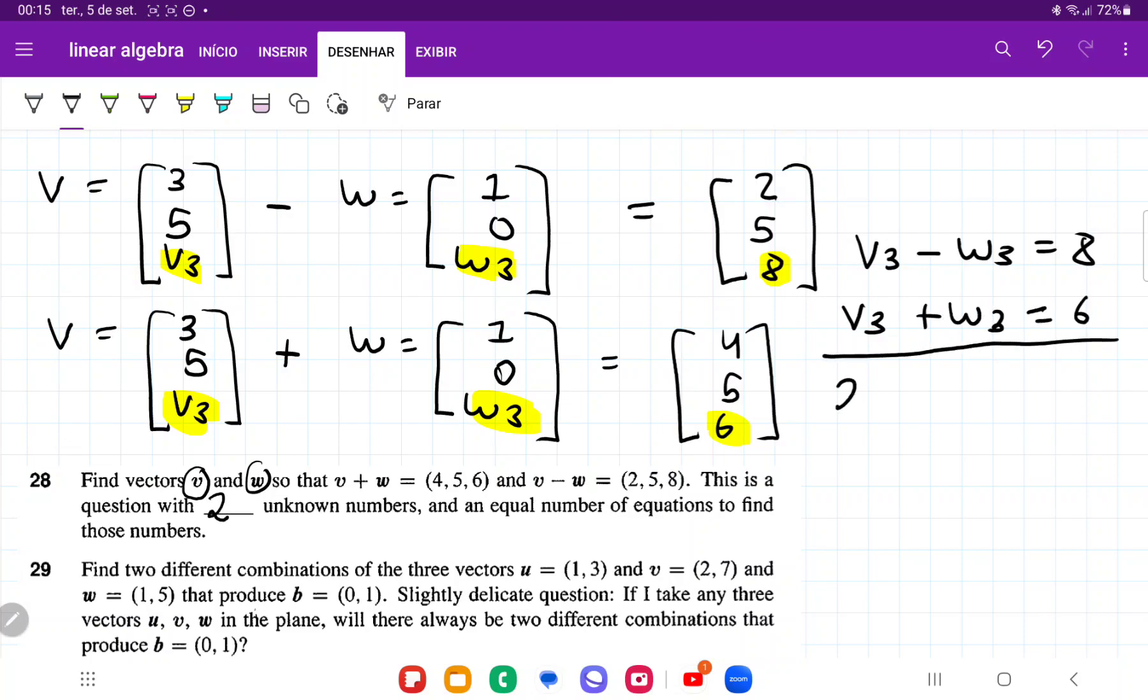Let's add these. We have 2v3, the w3 cancels, and this equals 14. So v3 equals 7.